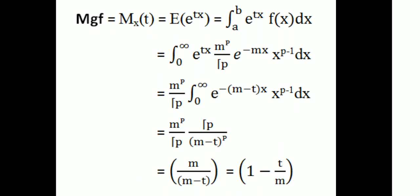The moment generating function of the gamma distribution: M_X(t) = E[e^(tX)] = ∫₀^∞ e^(tx) · (M^P/Γ(P)) · e^(−Mx) · x^(P−1) dx = (M^P/Γ(P)) · ∫₀^∞ e^(−(M−t)x) · x^(P−1) dx = (M^P/Γ(P)) · Γ(P)/(M−t)^P = (M/(M−t))^P. That is the moment generating function of the gamma distribution.